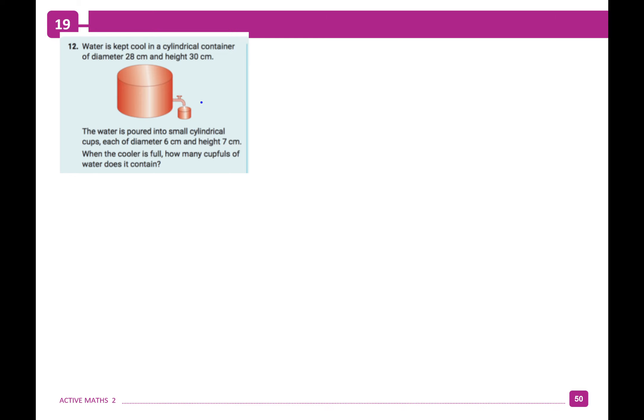Moving on to question 12. Water is kept cool in a cylindrical container of diameter 28 centimeters and height 30 centimeters. The water is poured into small cylindrical cups, each of diameter 6 centimeters and height 7 centimeters. When the cylinder is full, how many cupfuls of water does it contain? We're going to see how many small cups fit into the large cylinder.